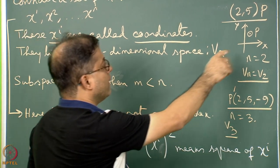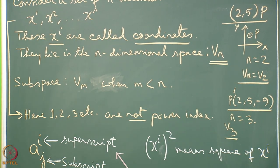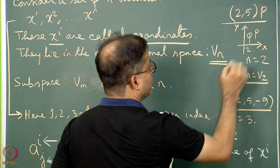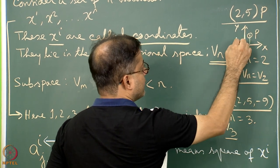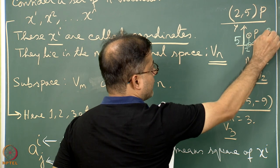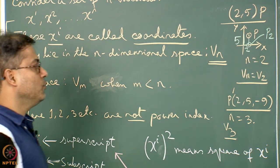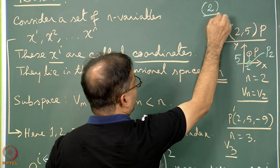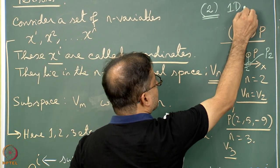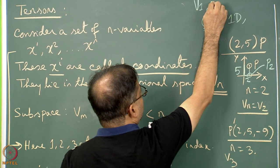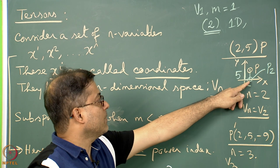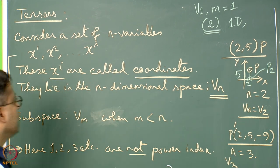The coordinate (2, 5) can be further resolved along the x and y coordinates — for example, distance 2 units along x and 5 units along y. If I project this point onto the x-axis, the projection P2 has a value of 2 units from a reference point. This becomes a one-dimensional space, V1, meaning m equals 1. So the projection along a line is a subspace of the two-dimensional geometry.